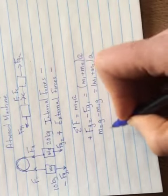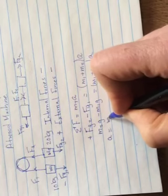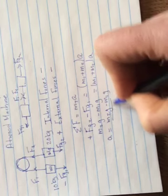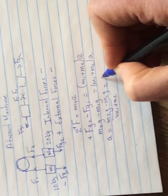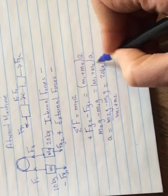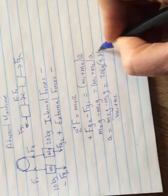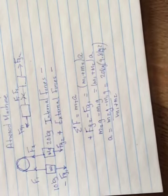And maybe the question says solve for A. So then you would divide by the M1 and the M2. And you would get your A. So it would be 20 kilograms times 9.81. Got to run out of time to be continued.